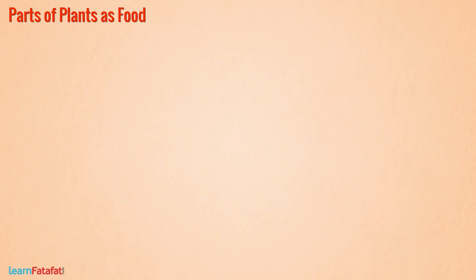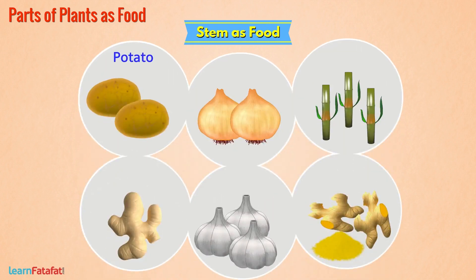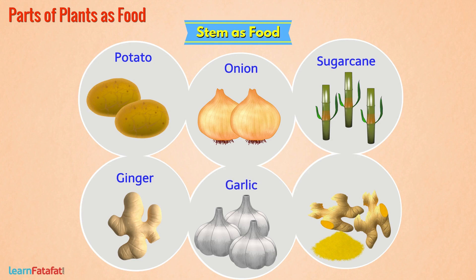We use the stem of plants like potato, onion, sugarcane, ginger, garlic, turmeric, etc. as food.